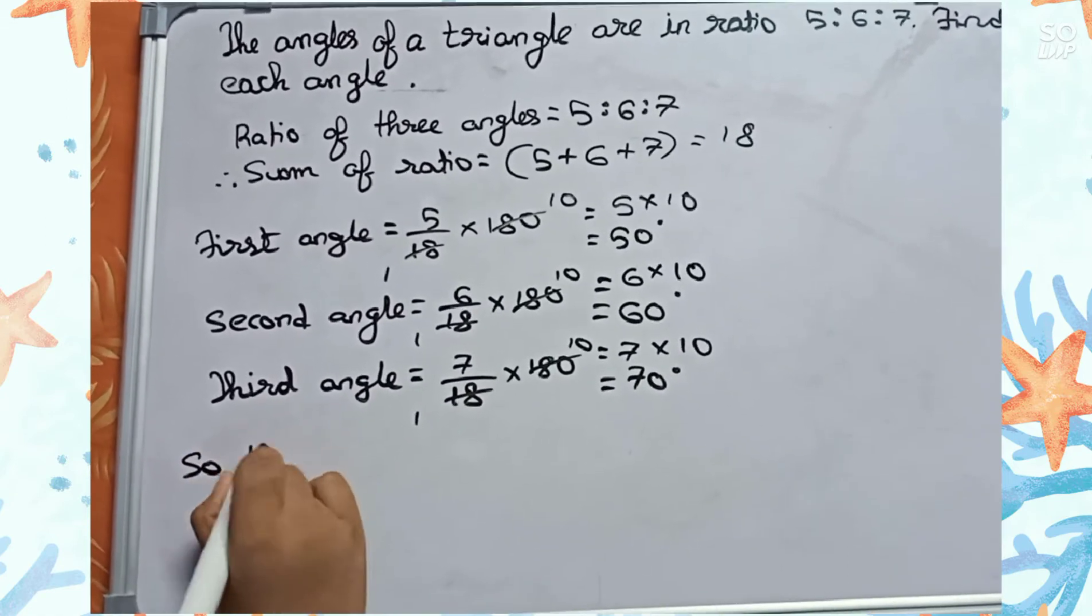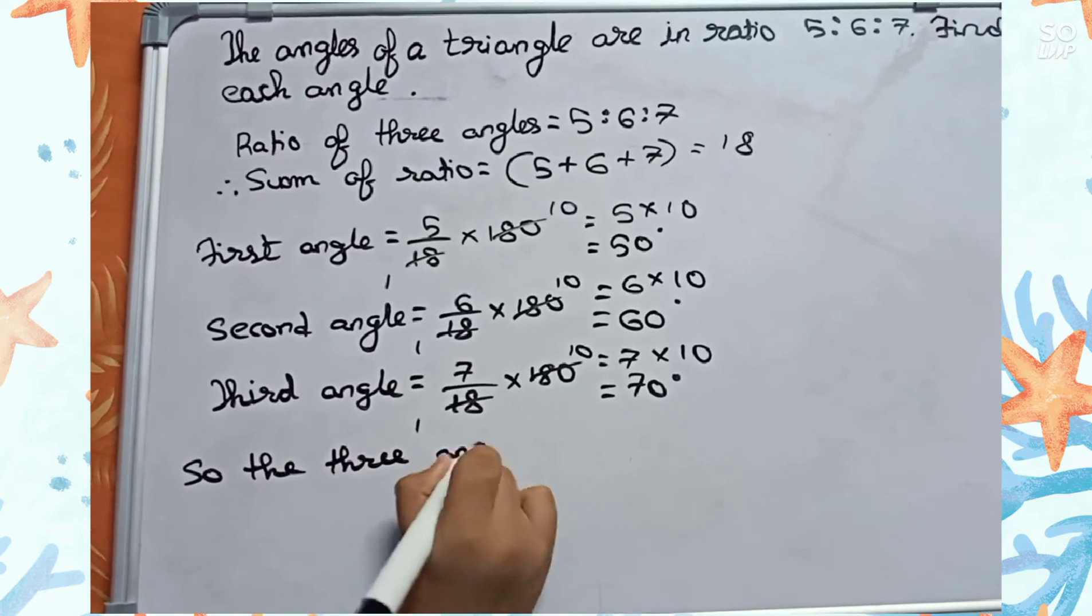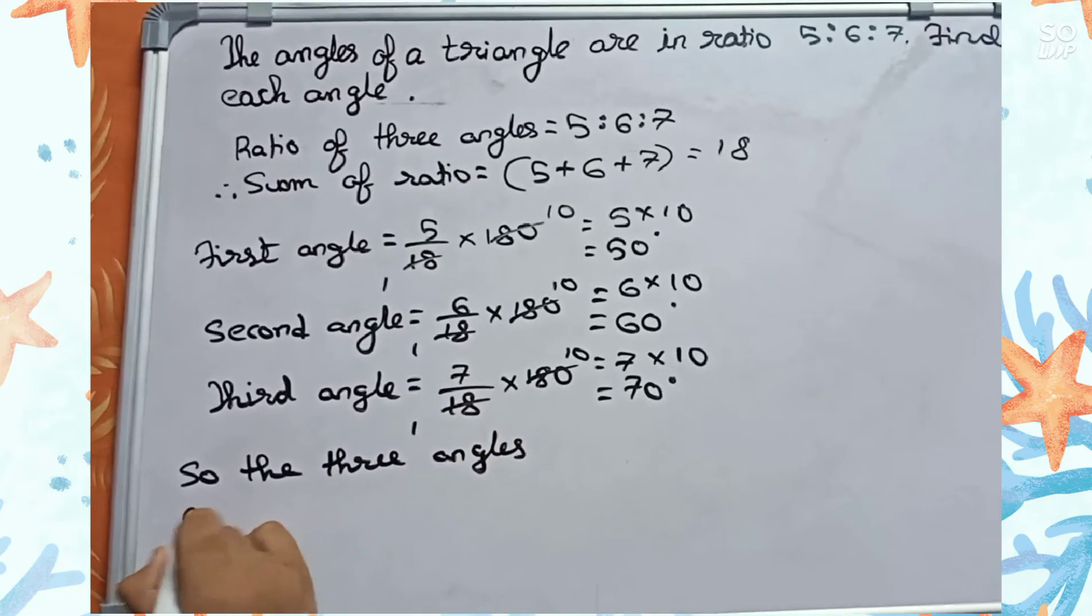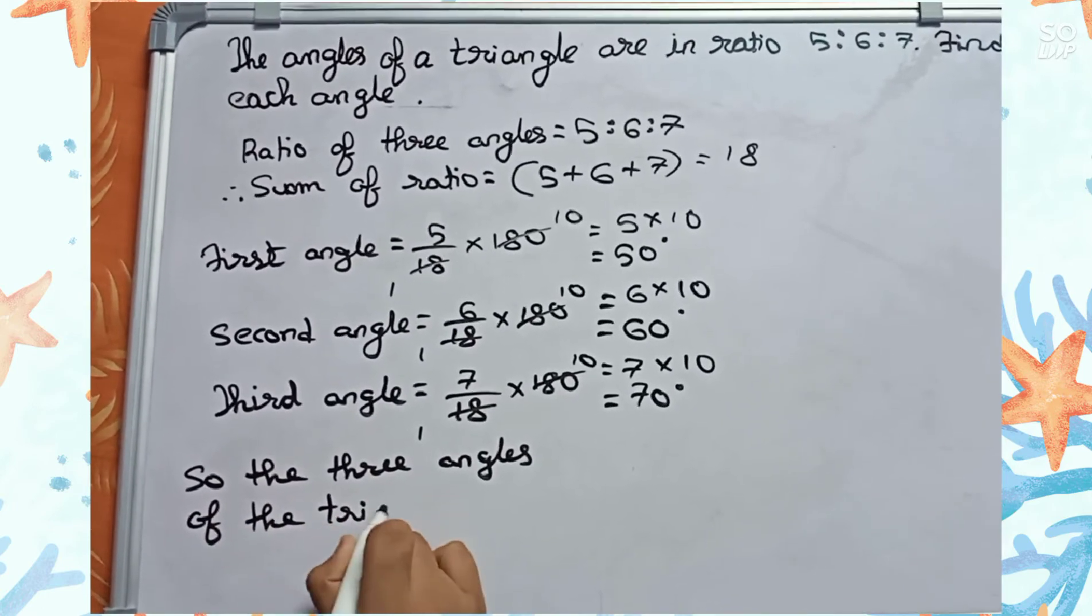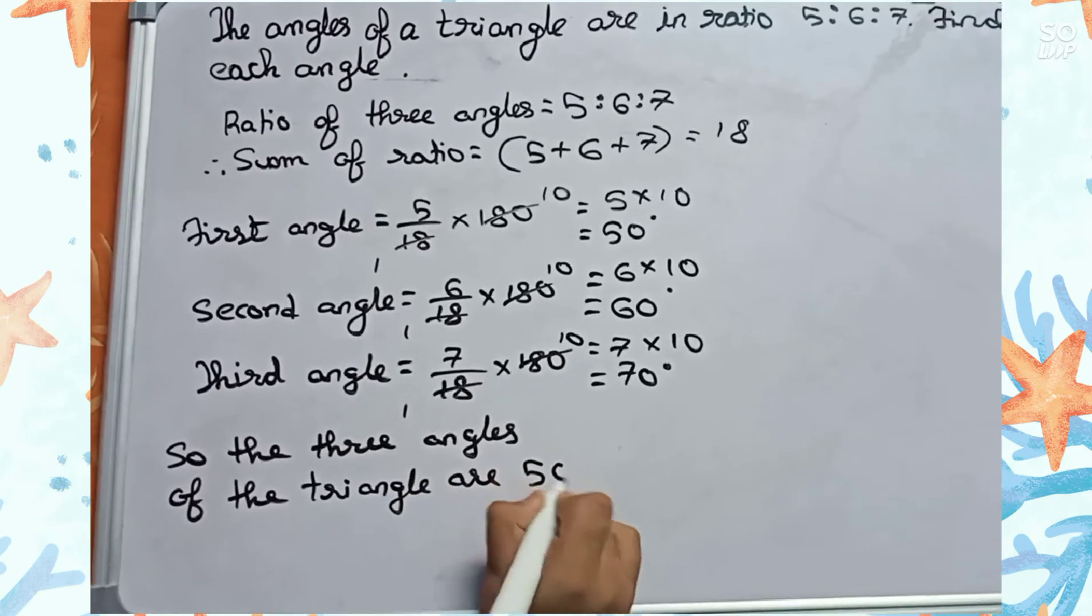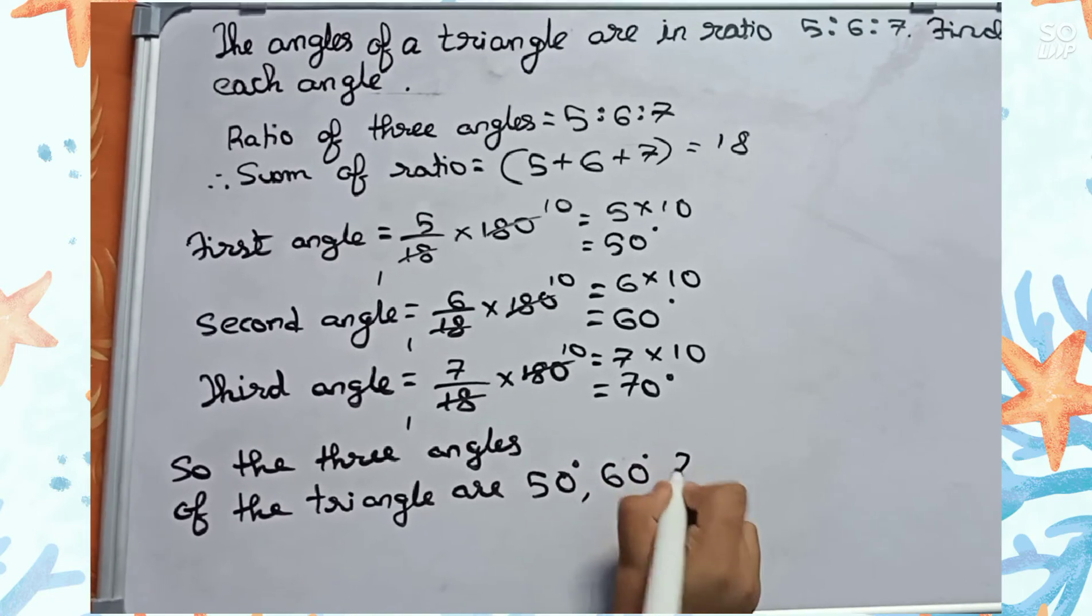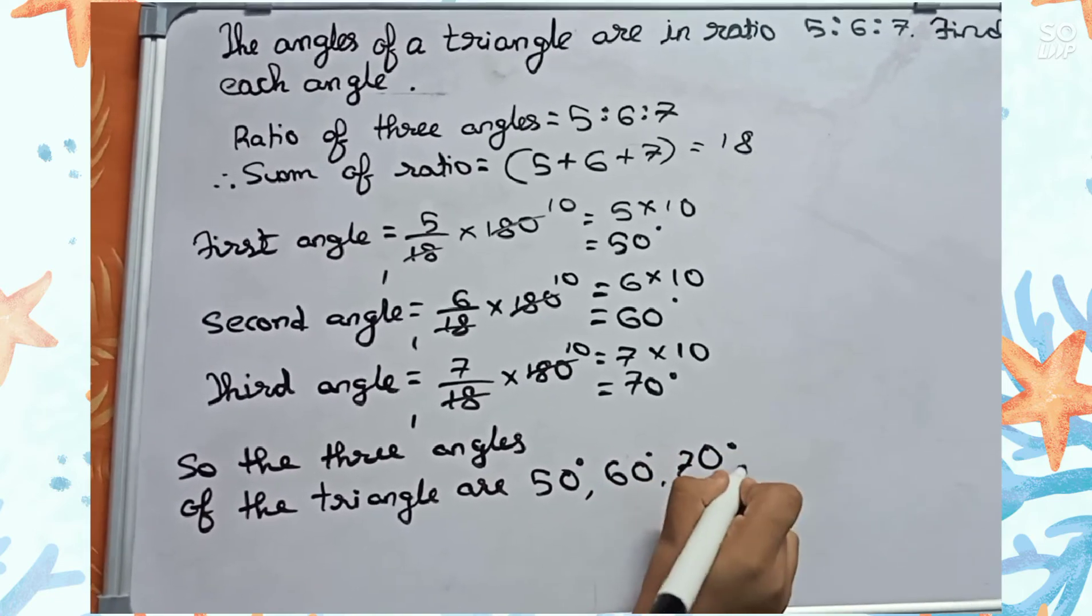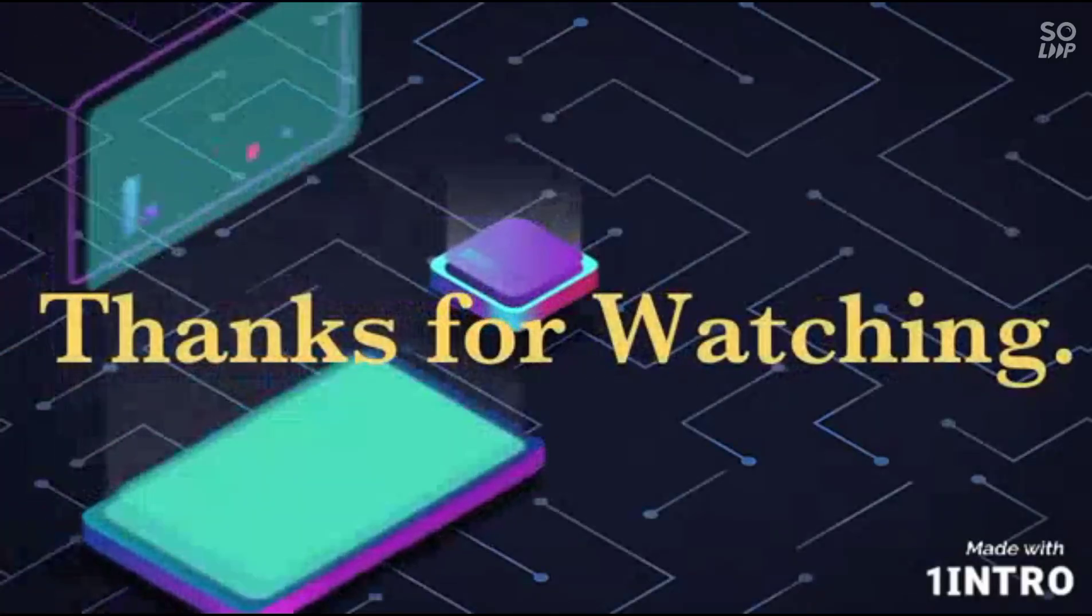So the three angles of the triangle are 50 degrees, 60 degrees, and 70 degrees. So this is our final answer. Thank you.